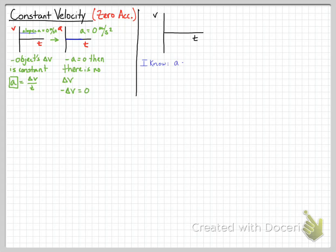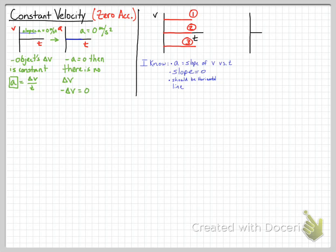So let's look at a velocity versus time graph and talk about the things we know. Acceleration equals the slope of a velocity versus time graph. If the slope equals zero, it should be a horizontal line. We're going to do three examples: three horizontal lines — one in the positive quadrant, one right on the zero line, and one in the negative quadrant.